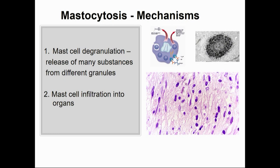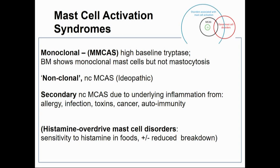With mast cell activation syndromes: if it's monoclonal, they usually have a higher baseline tryptase, and bone marrow shows monoclonal mast cells but not fulfilling the criteria for mastocytosis. Then there's the more common non-clonal mast cell activation syndrome that Alex has talked about, secondary forms of that, and also some patients who've got one of the histamine overdrive disorders.